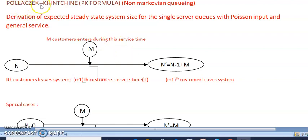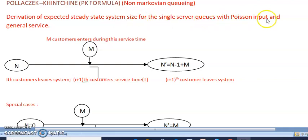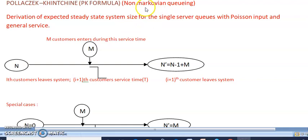Today we will see the Pollaczek-Khinchine (PK) formula which comes under non-Markovian queuing. Here we will derive the expected steady state system size for a single server queue with a Poisson input and general service. This system is a non-Markovian queue which is not exponential, and it will follow a general service time distribution.